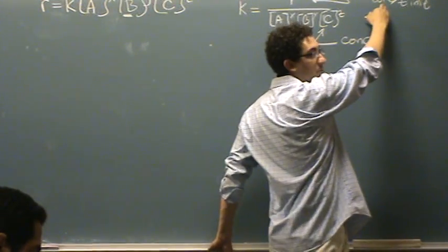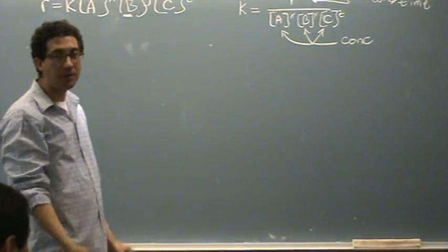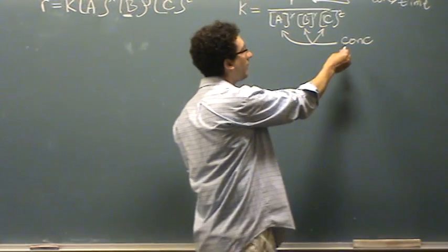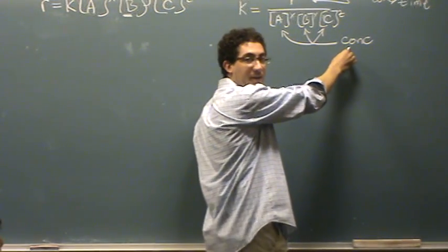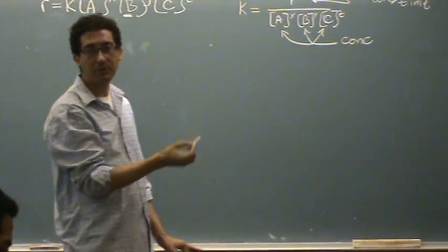And you basically just remove one concentration from the top. If the overall order is 1, then you'd have concentration to the first power here, and your rate constant, concentrations would cancel, so it would be 1 over time.